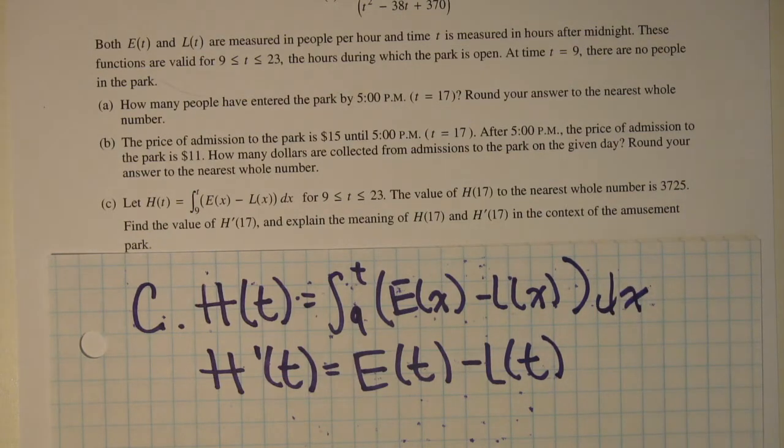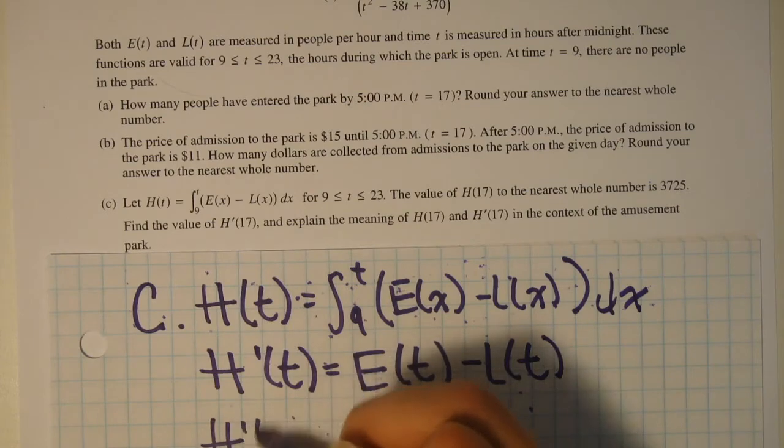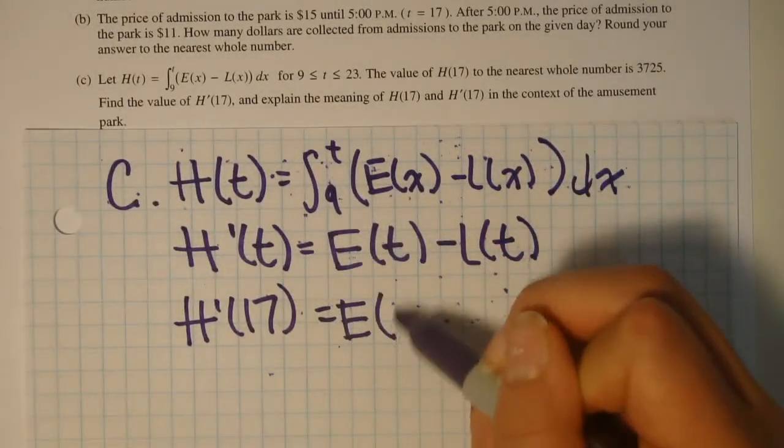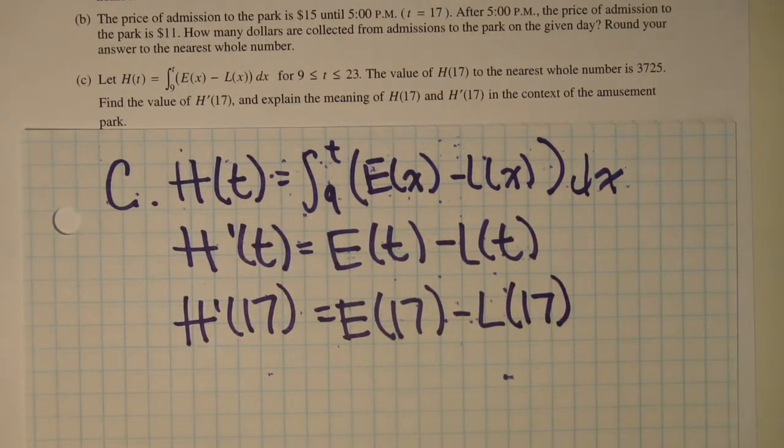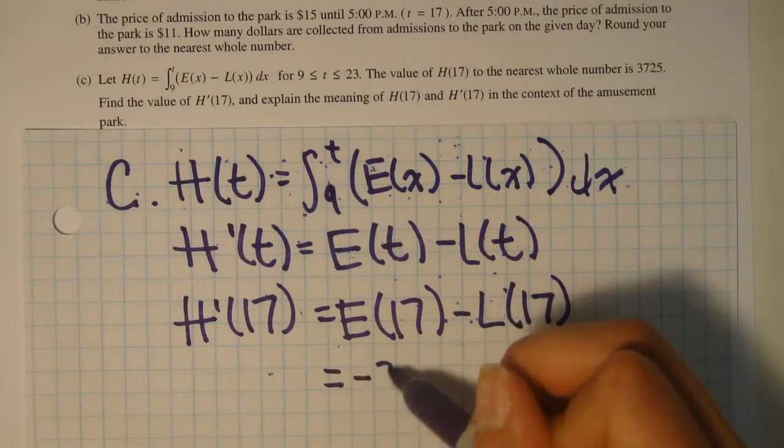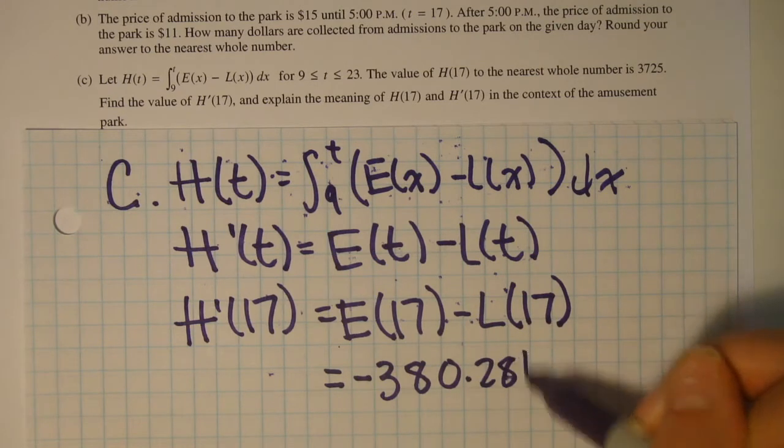And since they're looking for h'(17), we could just plug in h'(17). And once again, since this is calculator, all you need to show is the setup, just like so. And plug this into your calculator. Once you plug it in, you should get negative 380.281.